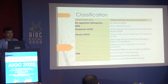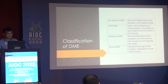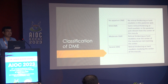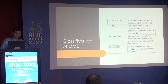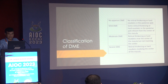The classification: apparently no diabetic retinopathy, mild, moderate, severe, and PDR. The classification of DME — a very important short question — could be: no apparent DME, mild DME, moderate DME, and severe DME. Mild will have retinal thickening away from the center of the fovea. Moderate is retinal thickening or hard exudates near the center but not involving it. Severe involves the center.